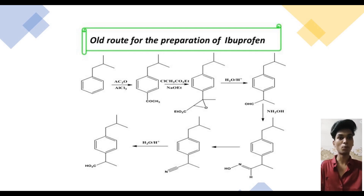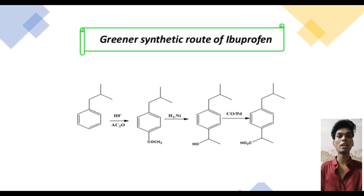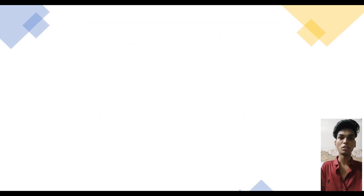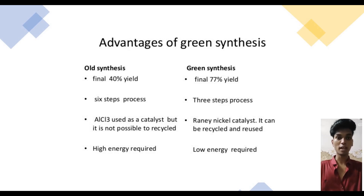This drug was produced at 3000 tons annually, and substantial amounts of chemicals were lost as waste. The new technology involves three catalytic steps with approximately 80% atom utilization, and replaces technology with six stoichiometric steps and less than 40% atom utilization. The use of anhydrous hydrogen fluoride as both catalyst and solvent offers important advantages in reaction selectivity and waste reduction. The above slide shows the advantages of the greener method used over the old one.